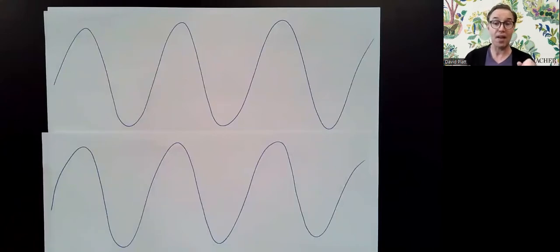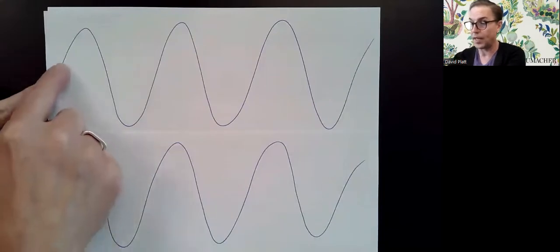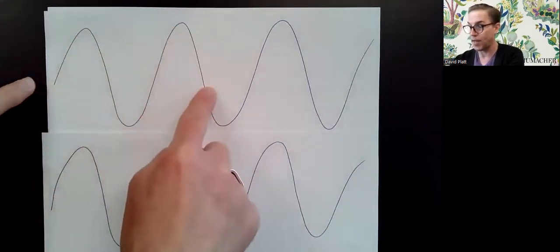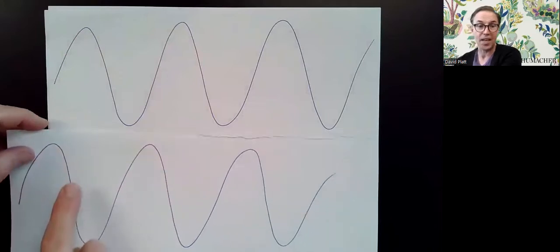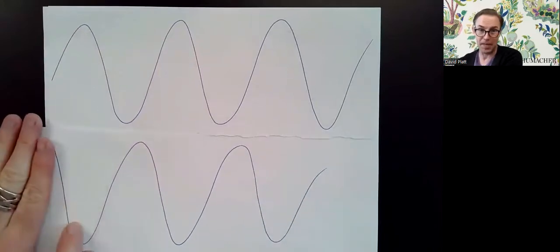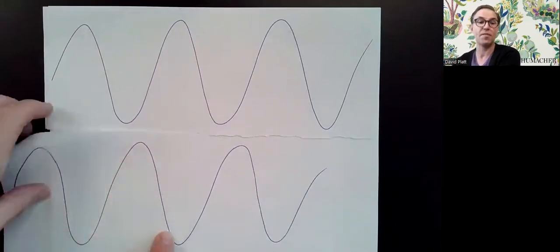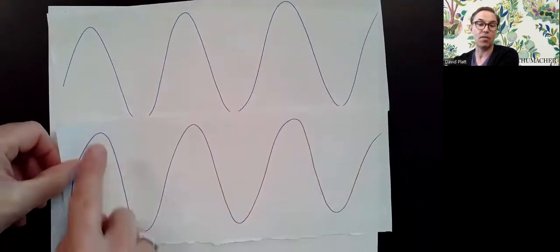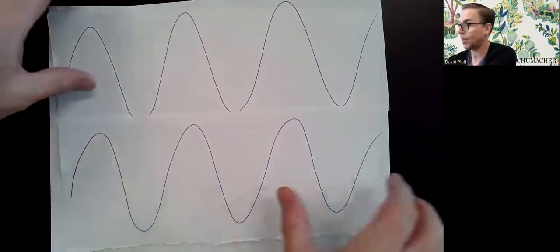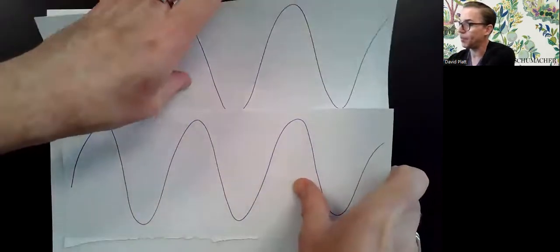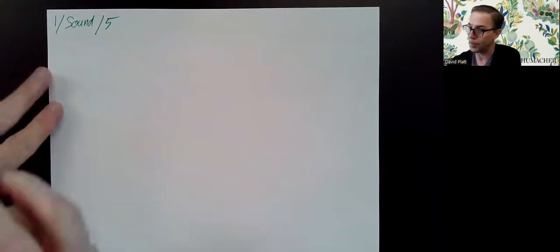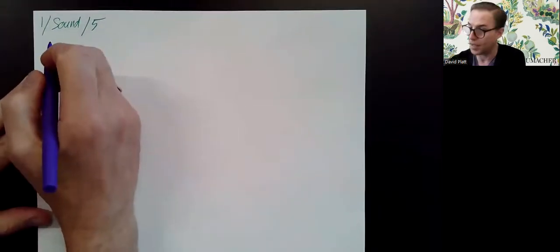They also have to be in sync. If source one is emitting a crest, then a trough, then a crest and a trough, the second source cannot start by emitting a trough and then a crest. They have to be in sync — they have to start out with a crest. We need these two conditions in order for all of today's material to work.